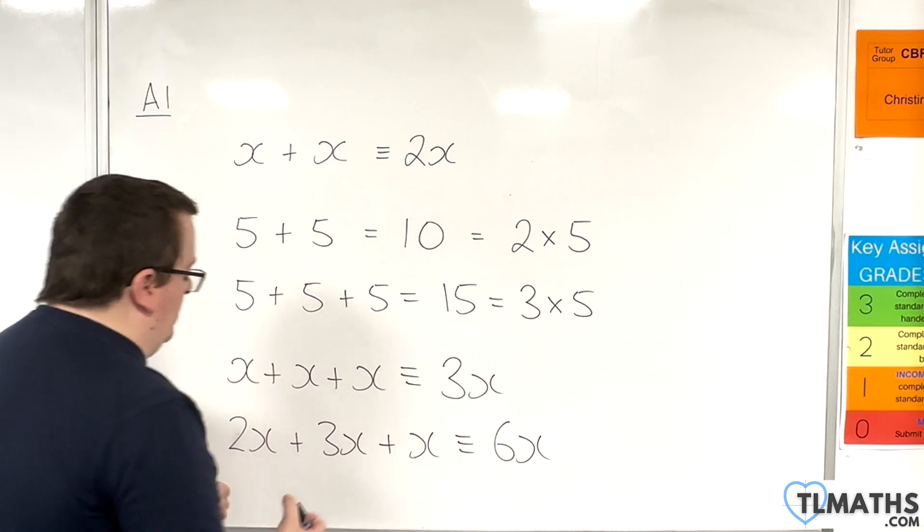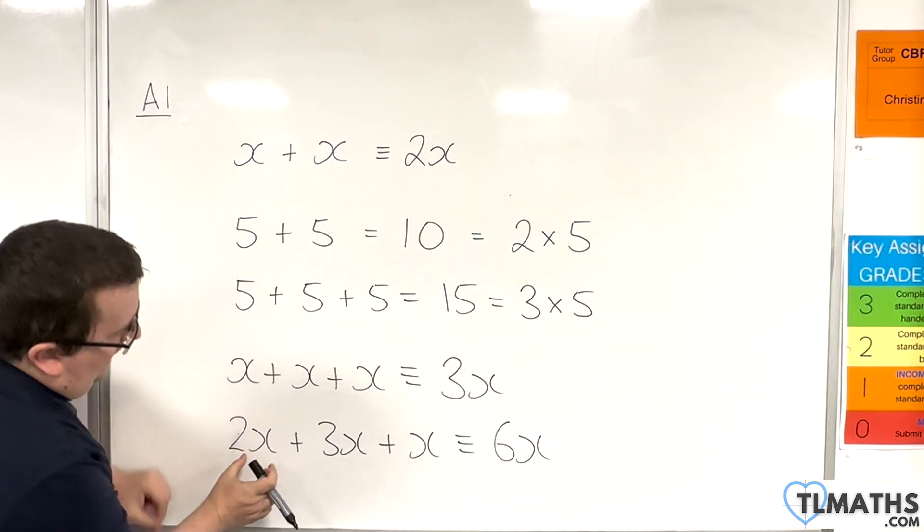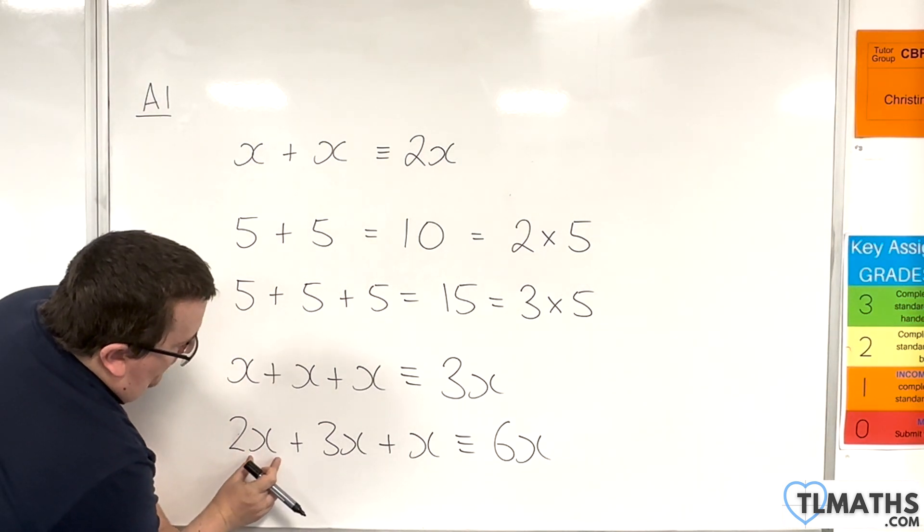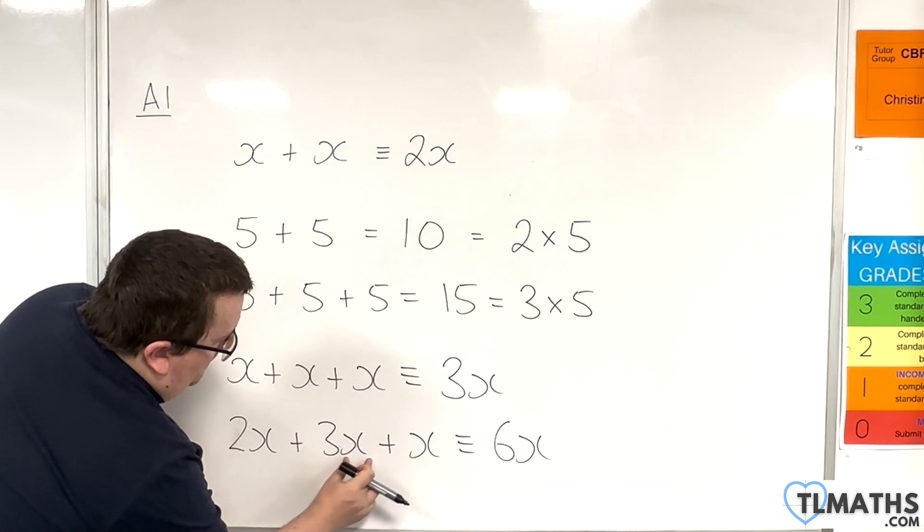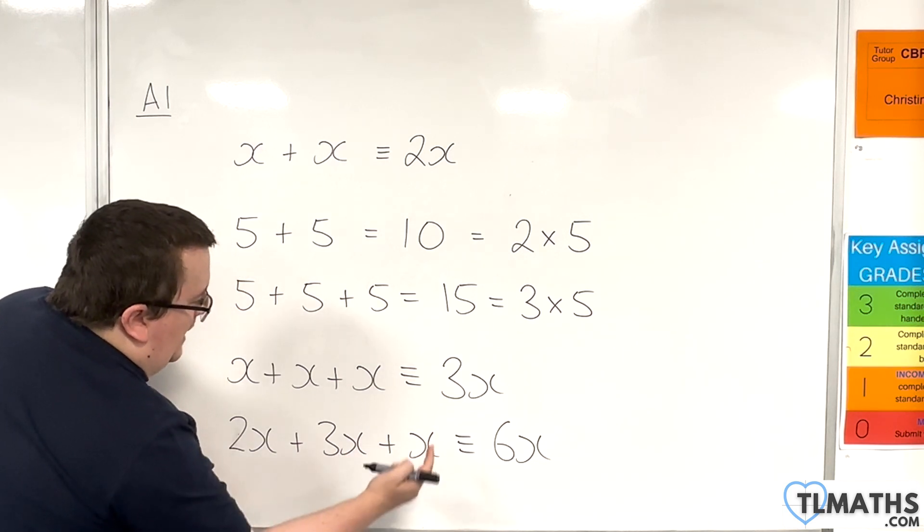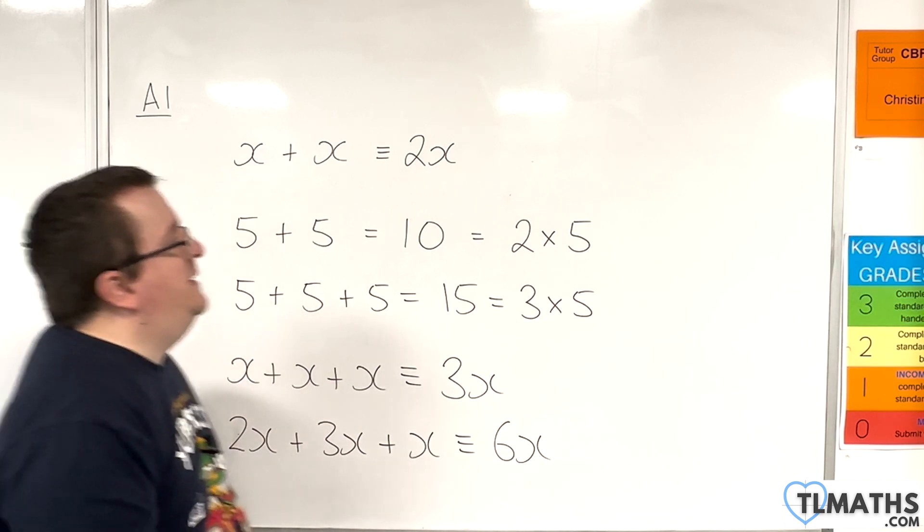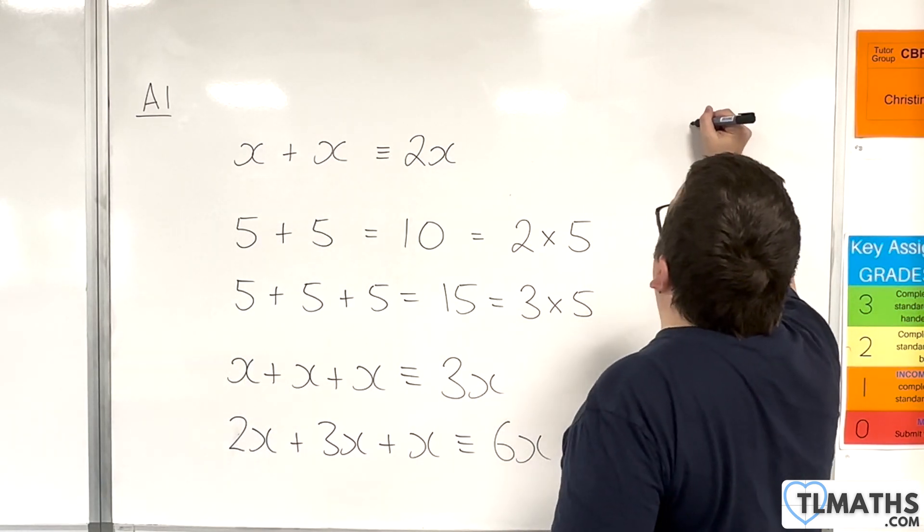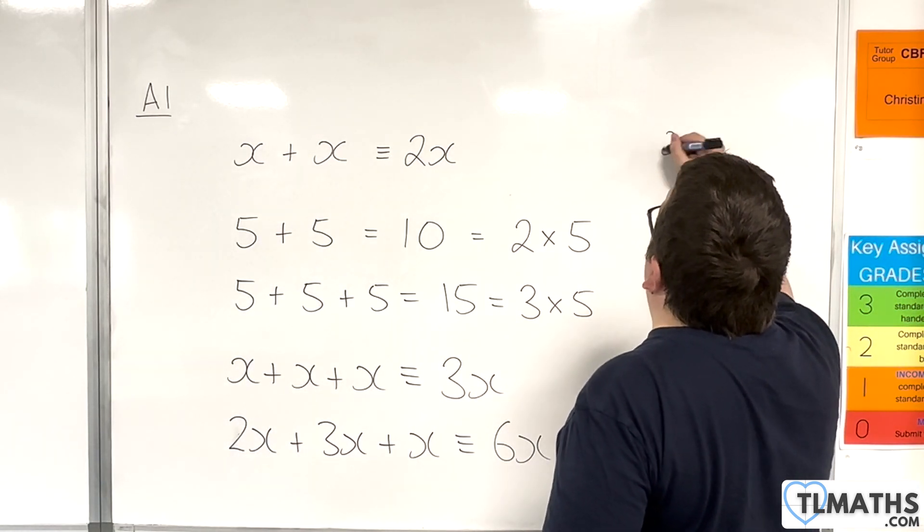Now, what I mean by like terms is that the algebraic bit to the right of the number is the same in each case. Now, you'll notice that this x by itself, we don't bother writing down 1x, do we?